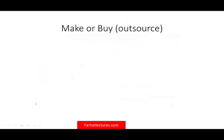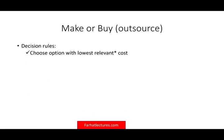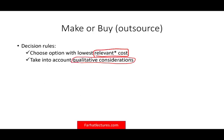So let's look at the make-or-buy decision, or outsourcing. What are the decision rules? We should choose the option with the lowest relevant costs. We compare the relevant costs and take into account qualitative considerations. In school you mainly worry about the quantitative side, but in the real world you must also consider factors beyond the numbers when deciding whether to make or buy.